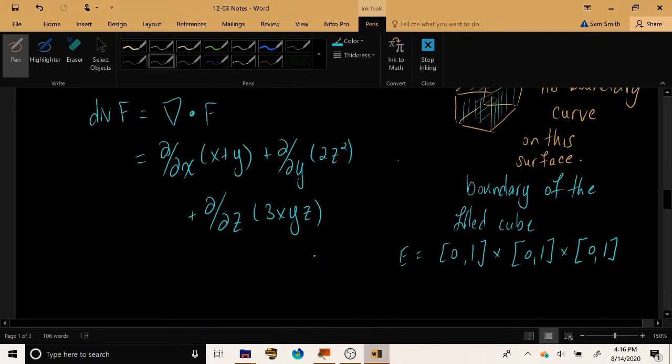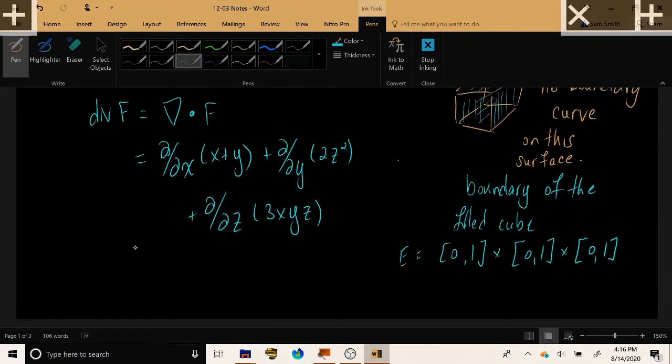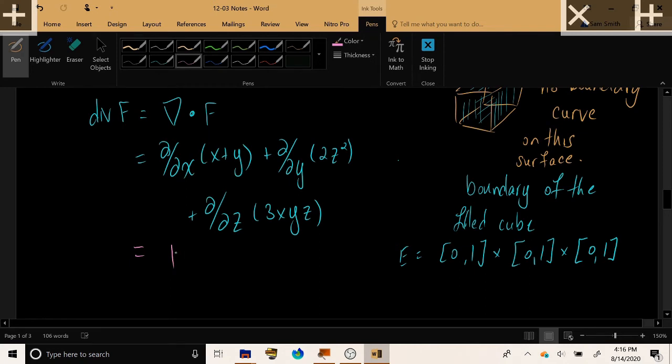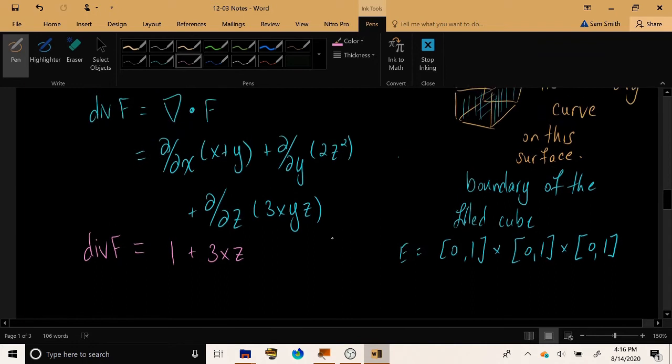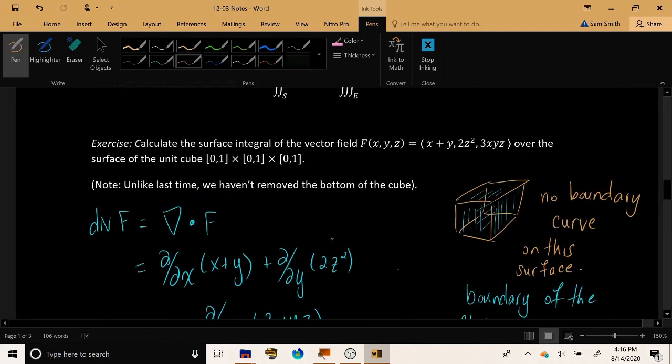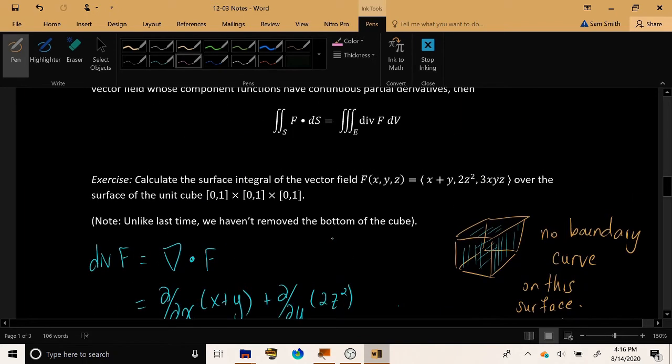All right, so as a result of taking those calculations, the first one gives me 1, the second gives me 0, and the third gives me 3xz for the Divergence of F. And so Divergence Theorem says instead of calculating the original surface integral, which would require 6 for the 6 sides, would need 6 surface integrals.